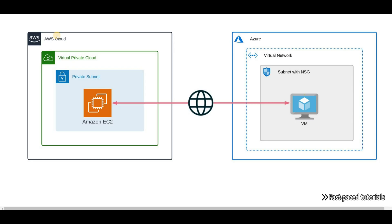Hello everyone and welcome to another episode of Fast Paced Tutorials. In this video we're going to connect our AWS VPC to our Azure virtual network. The scenario is that we have an Amazon EC2 instance which is a database server of some sort, and this virtual machine doesn't have a public IP address. On the other side we have a virtual machine in Azure which is a web server, and it requires access to our database server. The way we're going to solve this problem is to create a site-to-site VPN between AWS and Azure.